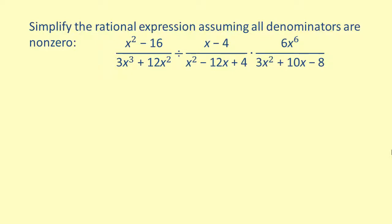We are going to simplify the rational expression (x² - 16)/(3x³ + 12x²) divided by (x - 4)/(9x² - 12x + 4) times (6x⁶)/(3x² + 10x - 8).